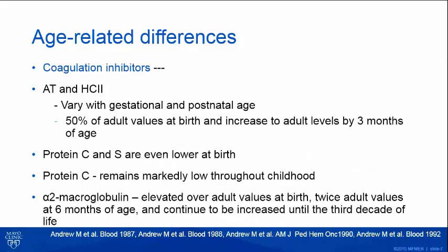Coagulation inhibitors — antithrombin and heparin cofactor II — were noted to be about 50% of adult values and gradually increased to reach the adult range by about three months of age. Protein C and protein S were even lower at birth, with protein C remaining markedly low throughout childhood, even up to age 16. Alpha-2-macroglobulin, which does not play a significant role in adult hemostasis, is elevated at birth, twice the adult values even at about six months of age, and continues to be increased until the 20s.